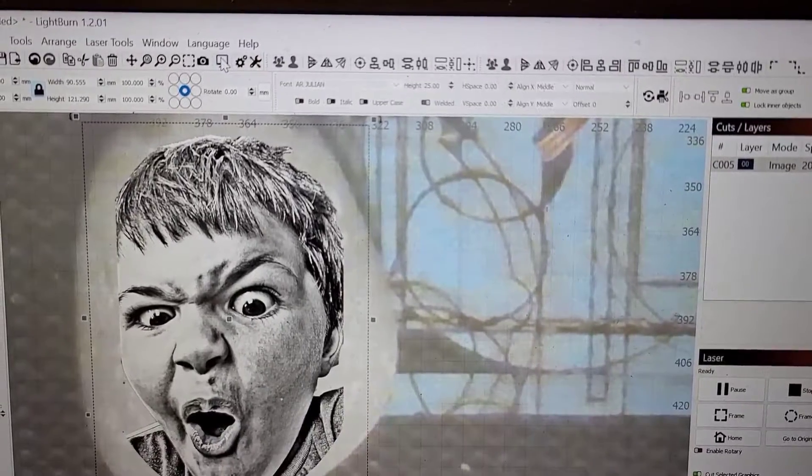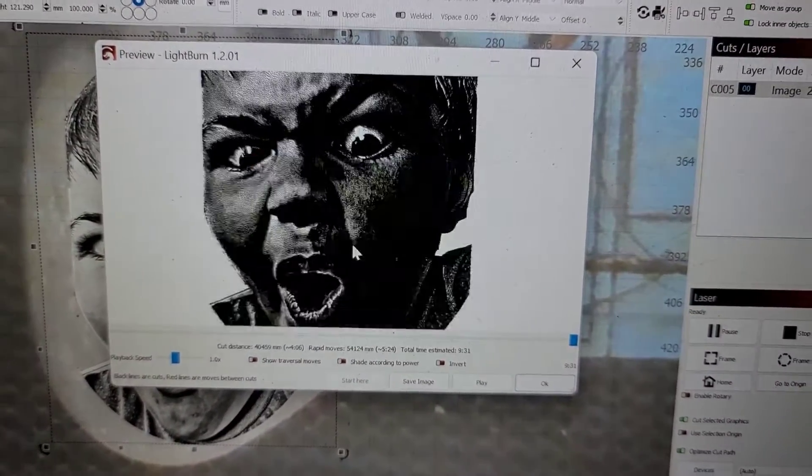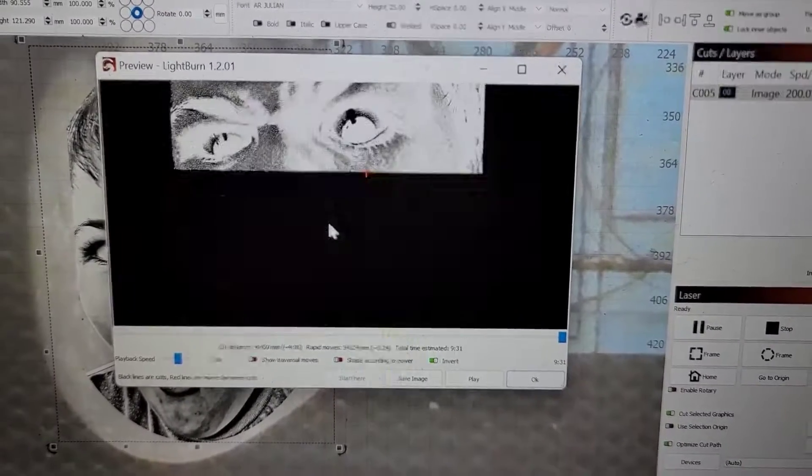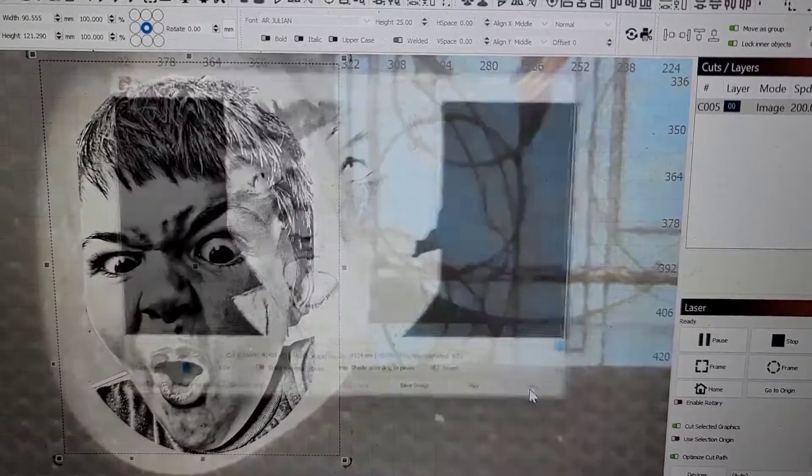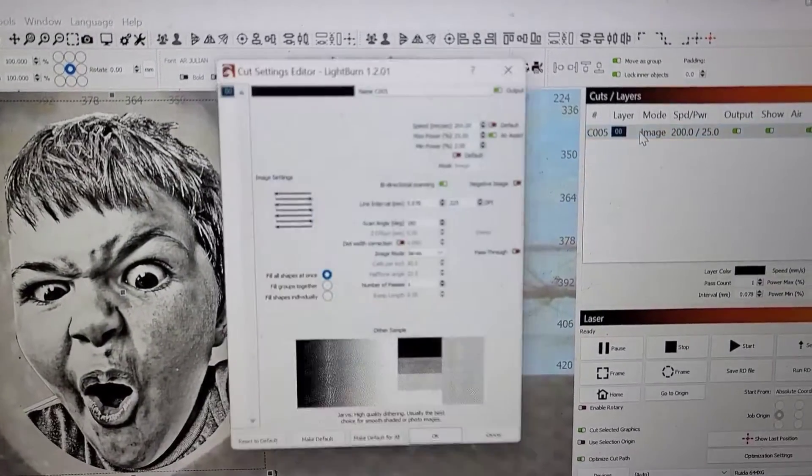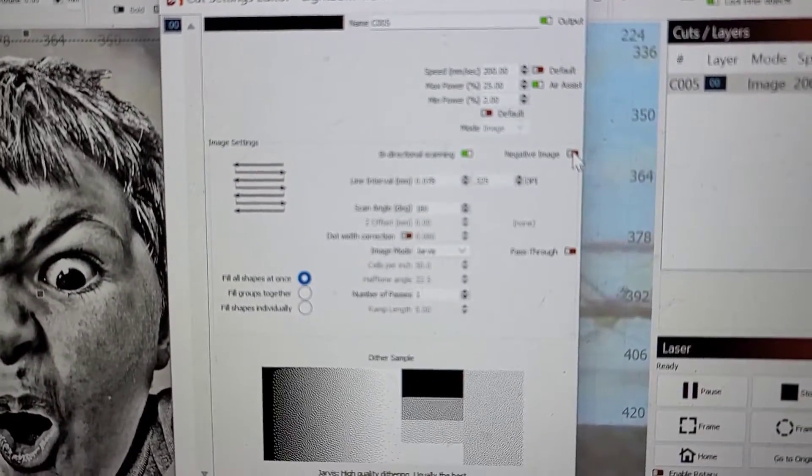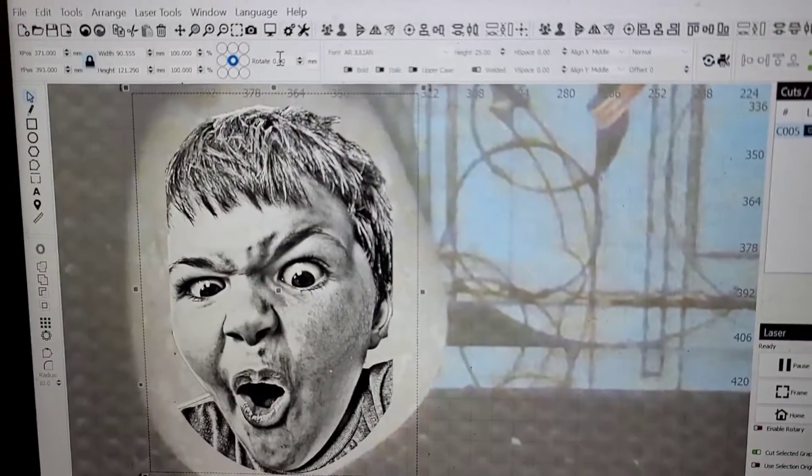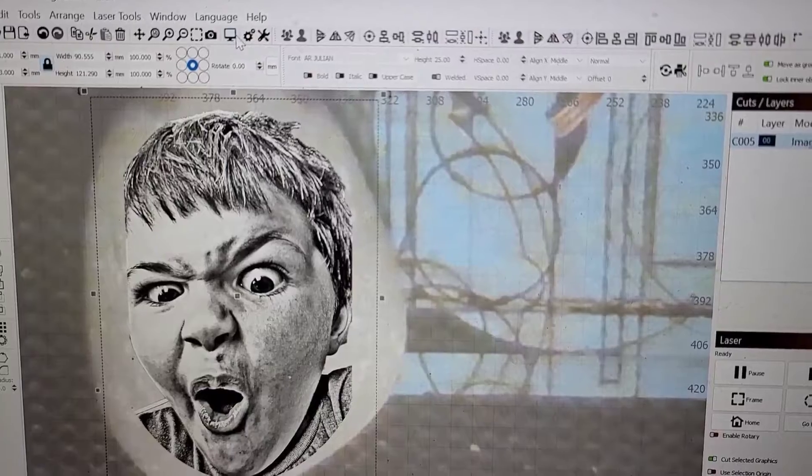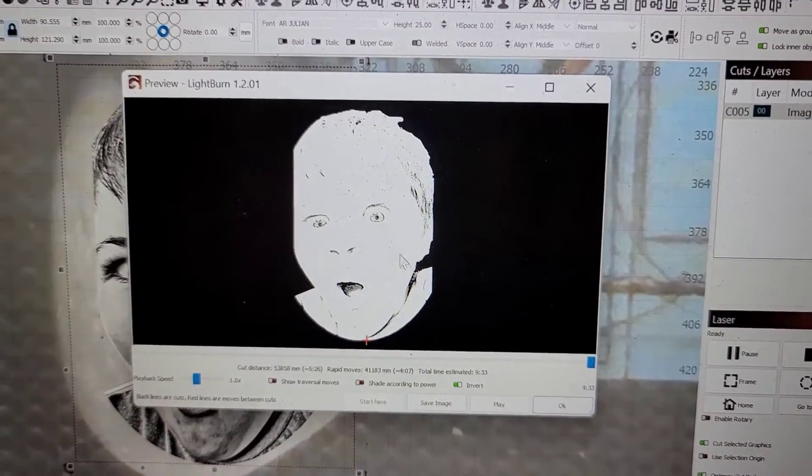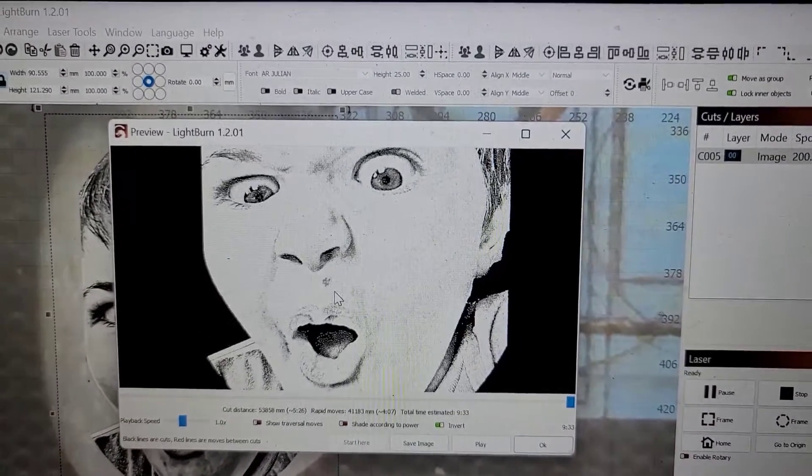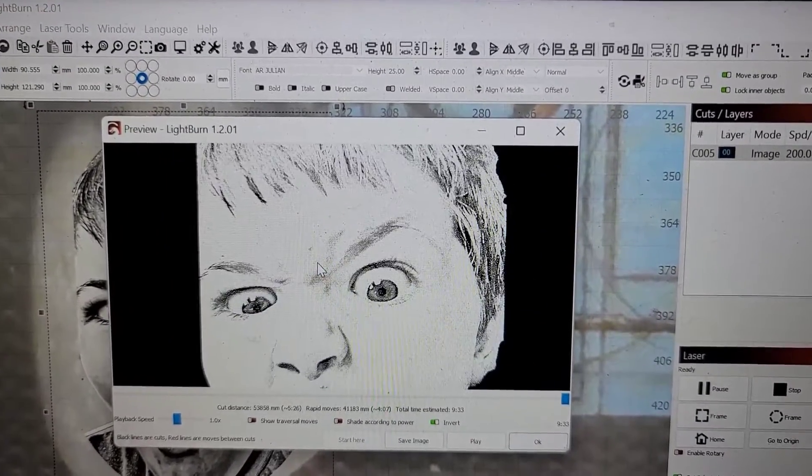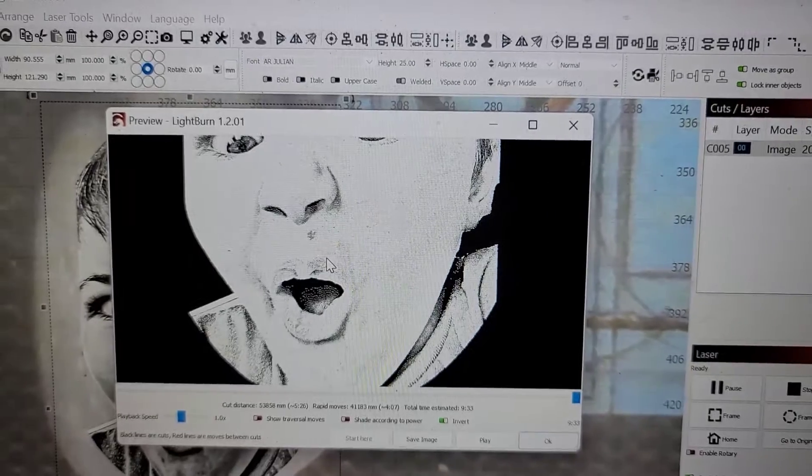A good thing to do before you do that, before you actually hit it, is to go up here to your preview button, check it out, make sure it's actually inverted. So I don't think that this is, let's double check it. Nope, it did not save it as a negative image. So that's why it's a good thing we double check that. Click OK, go back up to your preview.